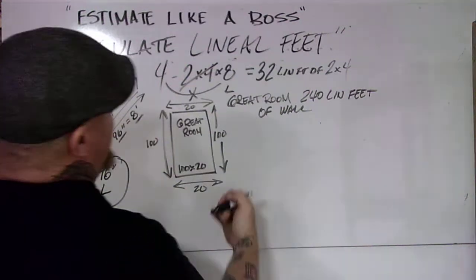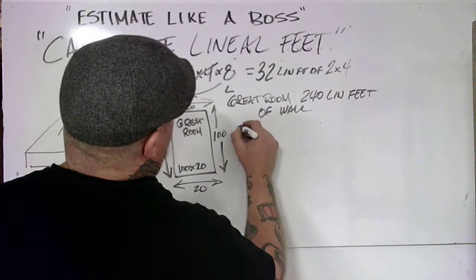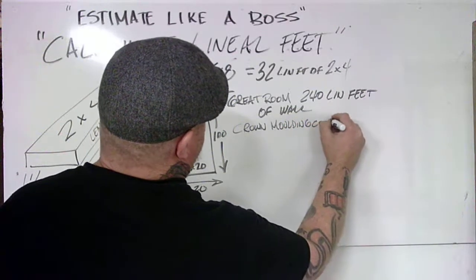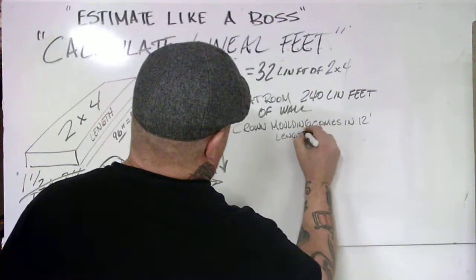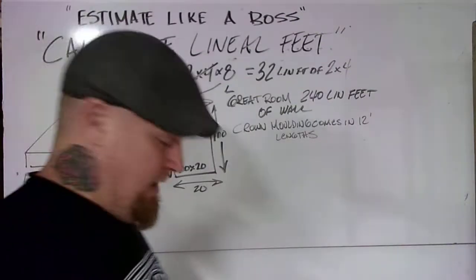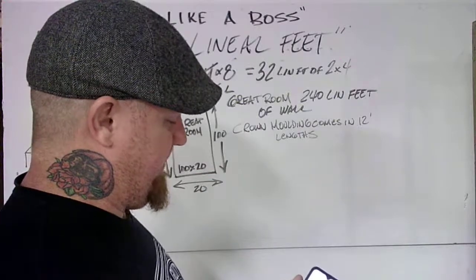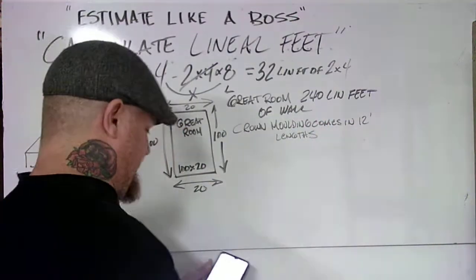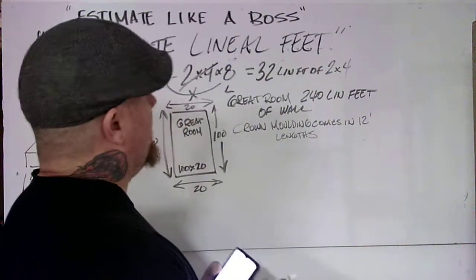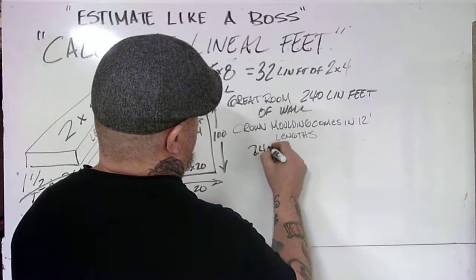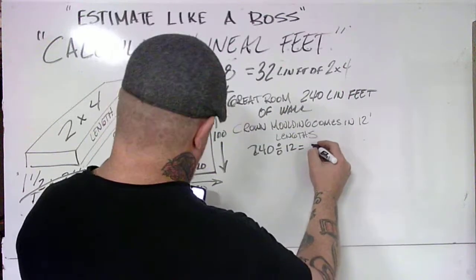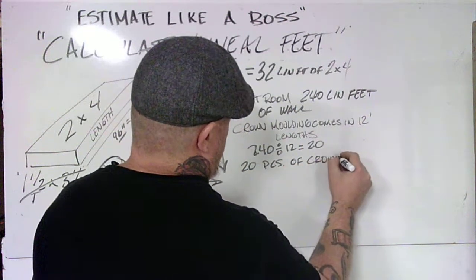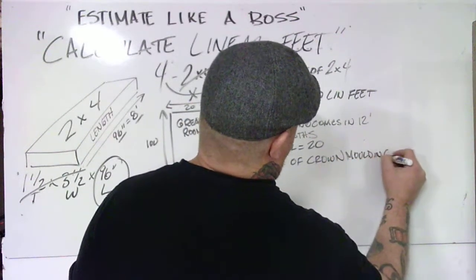Now say the crown molding we have only comes in 12-foot lengths. We go to Home Depot and the crown molding comes in 12-foot lengths. How we figure out how many pieces we need is simple. We're going to grab our calculator, clear it a couple times to make sure there's no numbers left over, and take 240 divided by 12 feet. 240 divided by 12 equals 20. We would need 20 pieces of crown molding.